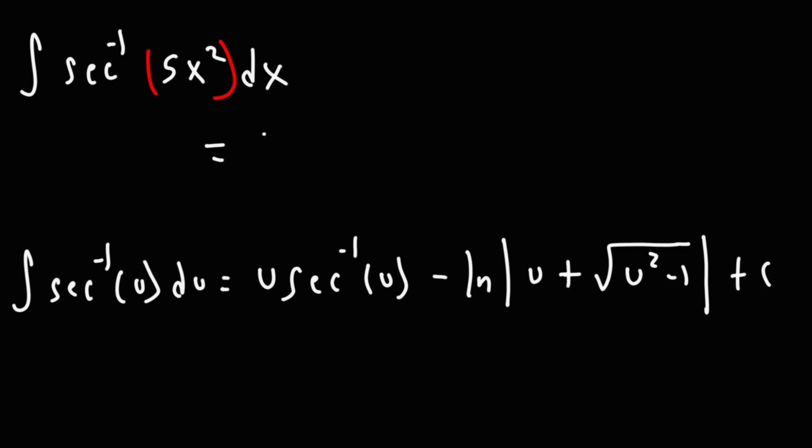So u is, I'm going to need more space, u is going to be 5x squared, and then arc secant, the original problem, 5x squared, minus the natural log of u, so that's another 5x squared, and then plus square root.